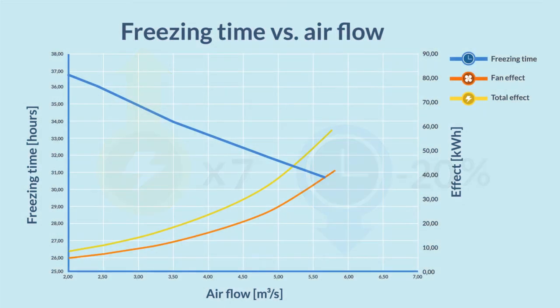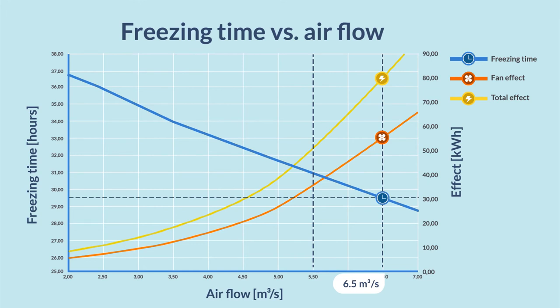Because energy consumption increases exponentially, these figures can become even more alarming when focusing on a reduction. For example, 31 hours at 5.5 cubic meters per second to 29.5 hours at 6.5 cubic meters per second. Here, the energy consumption increased by more than half, just to chop an hour and a half off the freezing time. Is this really worth it?